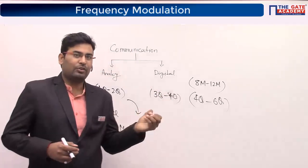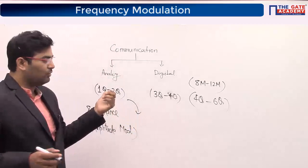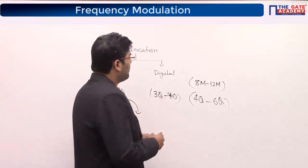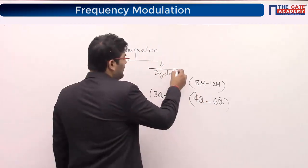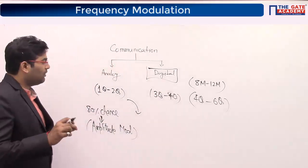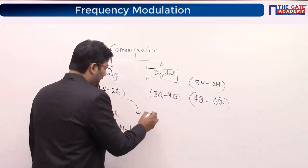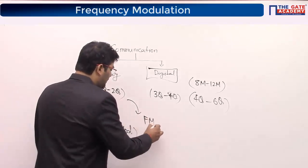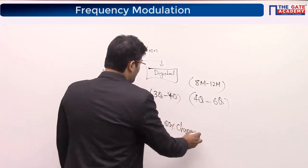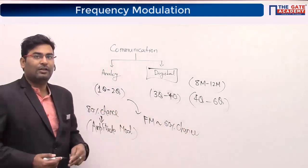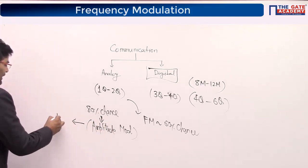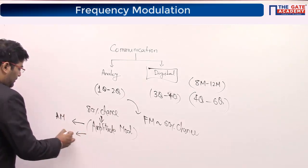That one question can be of 1 mark or 2 marks. Digital has a lot of topics, and when I come to digital I will go into details about which topics they ask and how many marks. In FM and angle modulation, there is a 60% chance of a question being asked within that 80% chance for amplitude modulation.